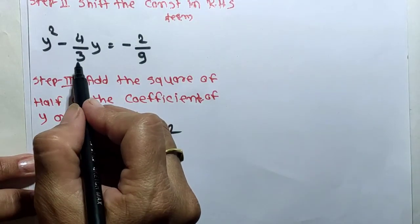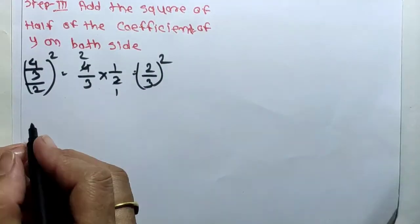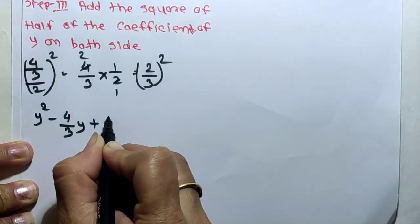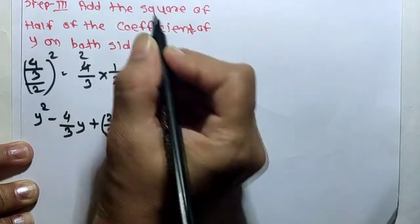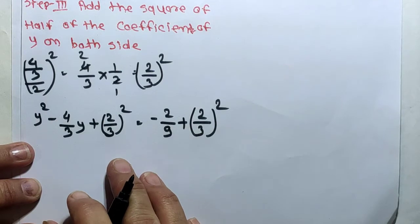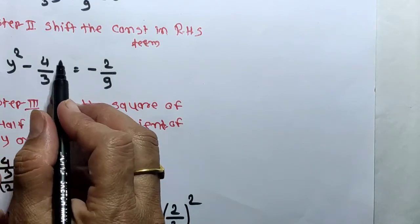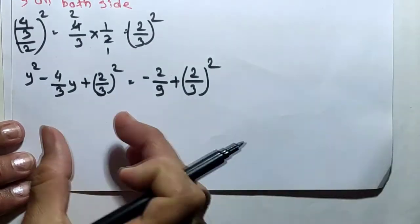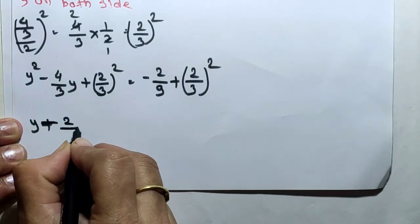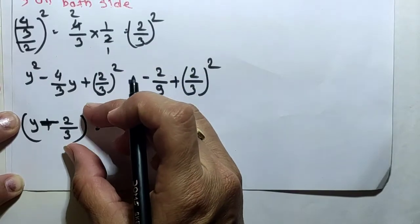The coefficient of y is 4/3; we divide by 2 and square it, adding it to both sides. The equation becomes: y² minus 4/3·y plus (2/3)² equals minus 2/9 plus (2/3)². The left-hand side is now the expanded form of (y − 2/3)², using the identity a² − 2ab + b².